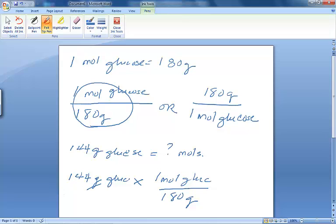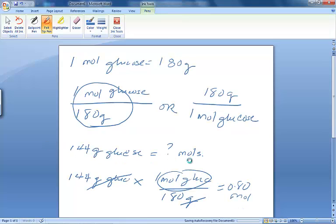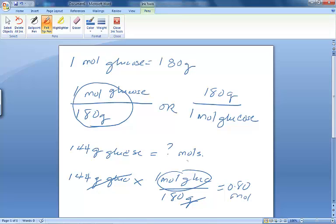So that grams and grams cancel out. Leaving us with 144 times 1, which is 144, divided by 180, which would give us 0.80. And the unit that's left is moles of glucose. So that is how we converted from grams to moles, using this particular conversion factor.